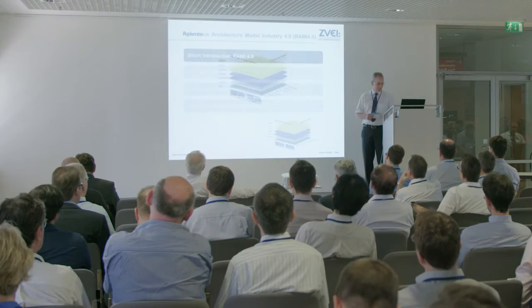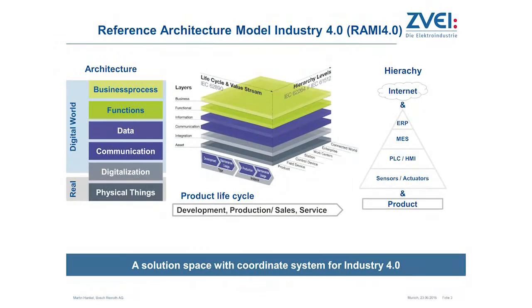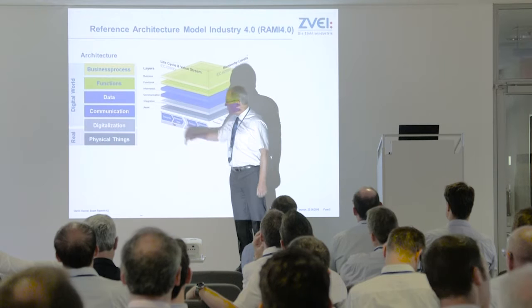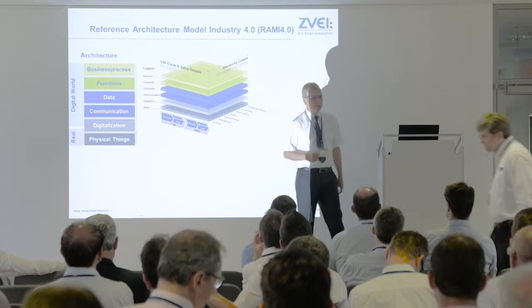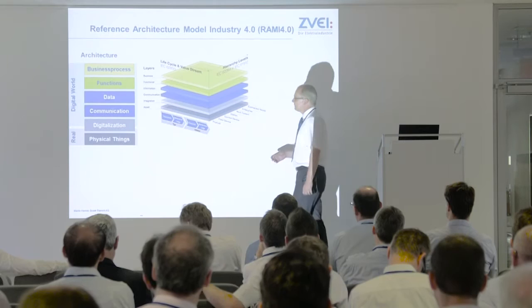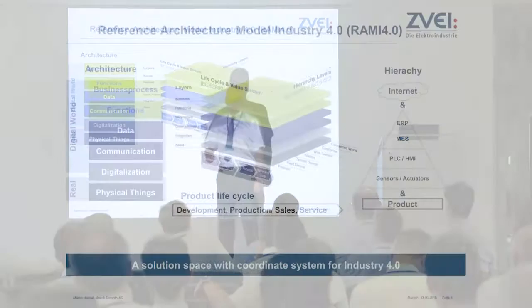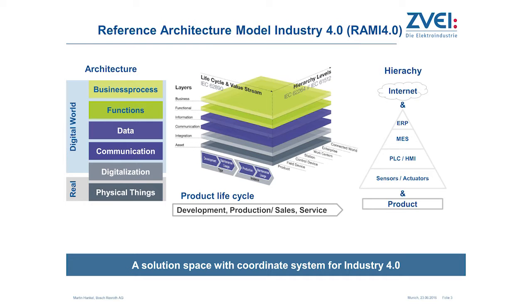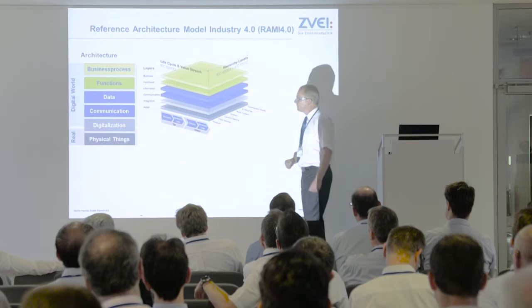If you look at the Reference Architecture Model Industry 4.0, you have seen it I believe. We have three axes. The first axis is about the architecture. Very simply: at the bottom you have the asset layer — the real physical things we have in the field. Then we have five layers above: the integration layer for digitalization, so all the assets can enter the digital world, and then four layers for the digital world covering communication, information, functions, and business processes.